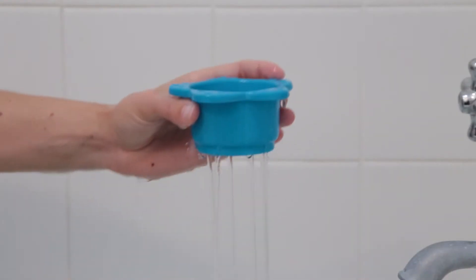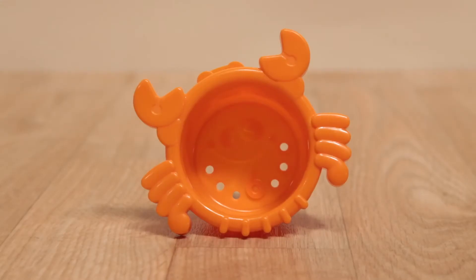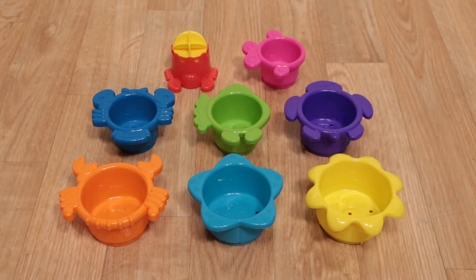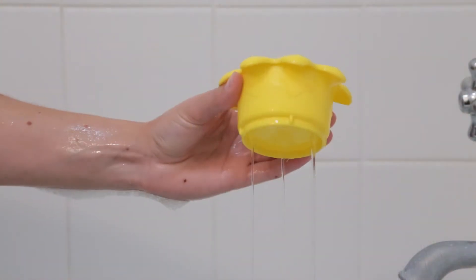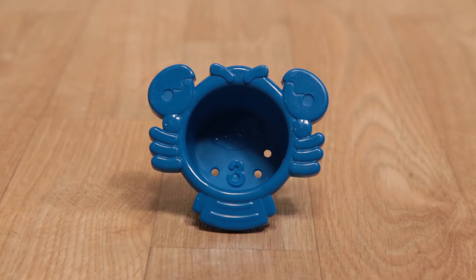The brightly colored cups have wide, thick handles on both sides for little hands to grab and pick up. Each cup has sea creature designs and is imprinted with a number on the inside for number recognition with a corresponding number of holes to watch the water drain from.